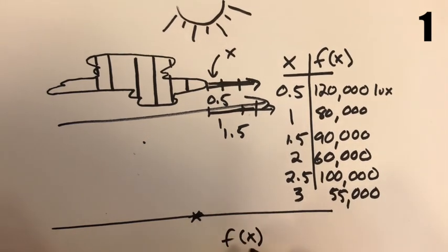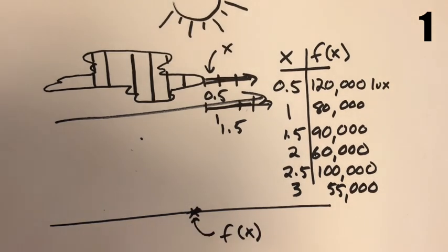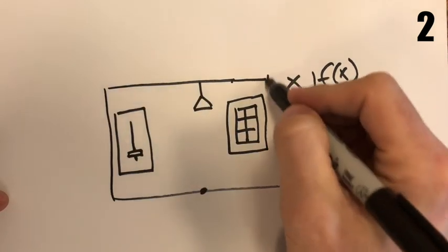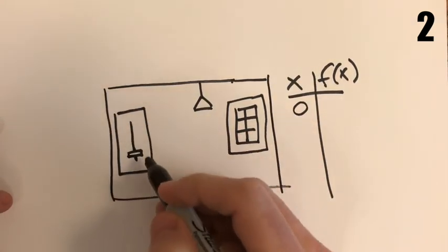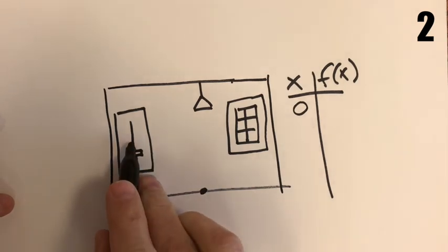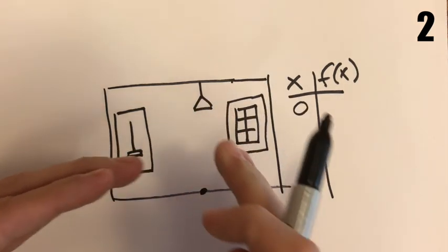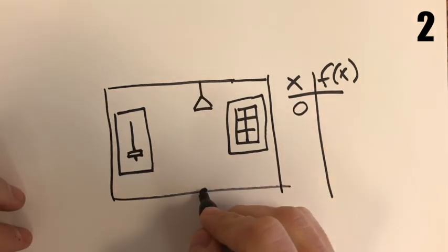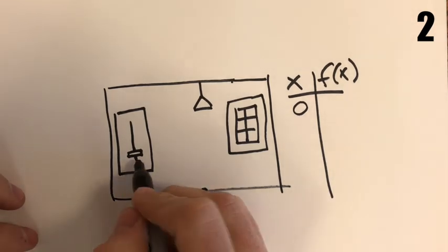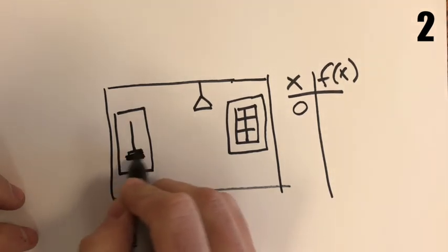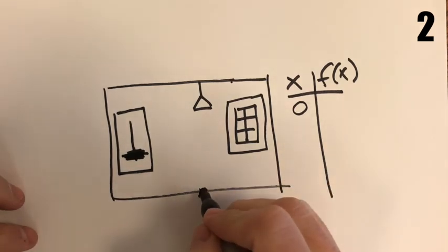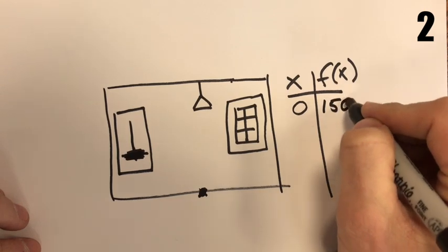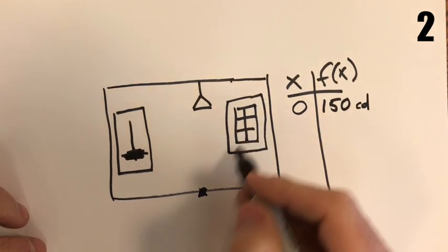In this situation we've got a room with a light on a dimmer switch. As the dimmer gets pushed up, it increases the amount of light coming out continuously. It's daytime outside, so we're looking at the luminous intensity at a spot on the floor. When the dimmer is down at zero, we actually have a luminous intensity of 150 candelas — that's just natural light coming in from the window.